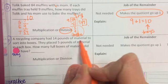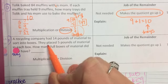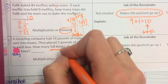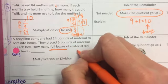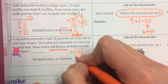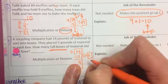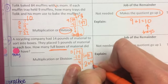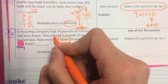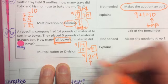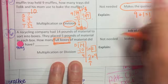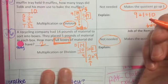A recycling company had 14 pounds of material to store into boxes. They placed 5 pounds of material in each box. How many full boxes do they have? So if your child did 14 divided by 5, which is what they should have done here, we would say 5 times 2 is 10, subtracting it 4. So my answer would be 2 remainder 4. Now if I'm thinking about full boxes, not leftovers, I had 2 full boxes with 4 left over. So my remainder here is not needed. I just had 2 full boxes.